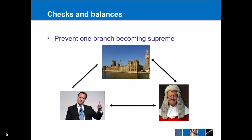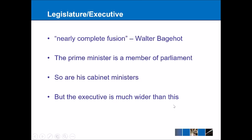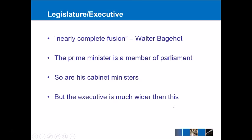So let's have a look at the three different branches. I have David Cameron here representing the executive, parliament as the legislature, and a judge here as the judiciary. We're going to look at each connection between the three of them in turn. The first one is between the executive and the legislature. In the 19th century, the political scientist Walter Bagehot was very critical of this relationship and described it as nearly a complete fusion.